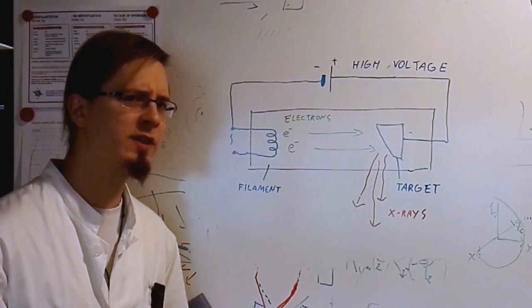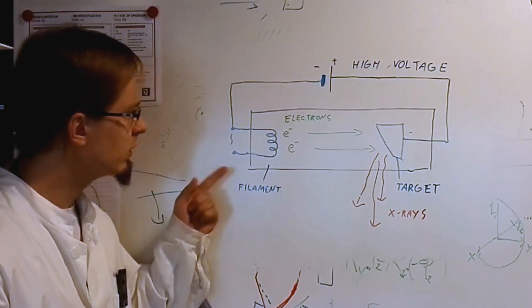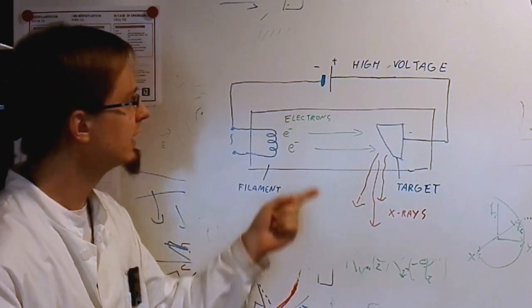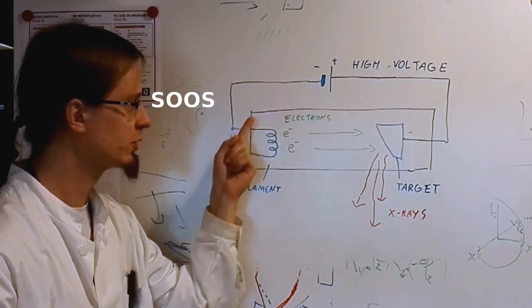But first, what is an x-ray tube? An x-ray tube is a rather simple device. It consists of a filament, a target or anode, and a high voltage source.